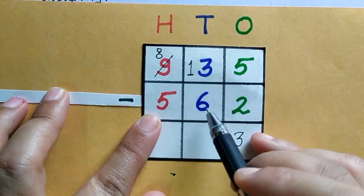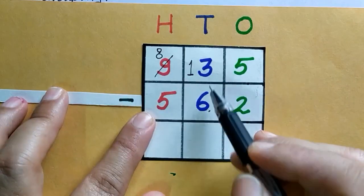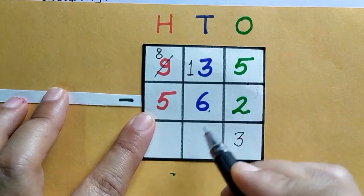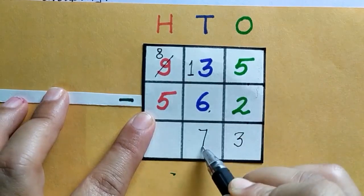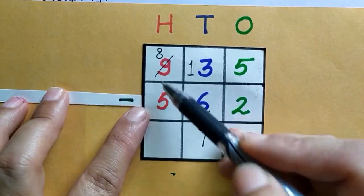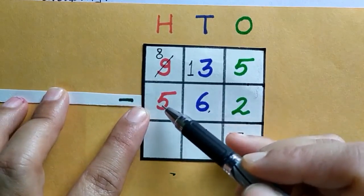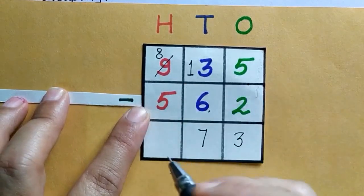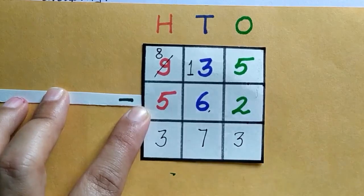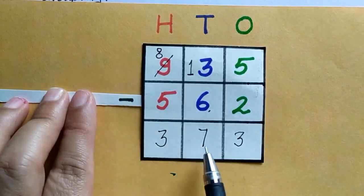Now we can subtract 6 from 13. 13 minus 6 is 7. Again at 100th place there is 8 and 5, and we can easily subtract 5 from 8. So 8 minus 5 is 3, and the answer is 373.